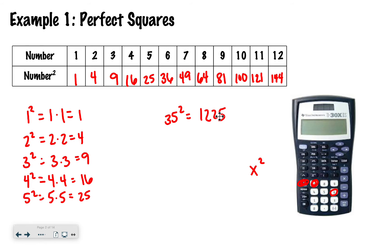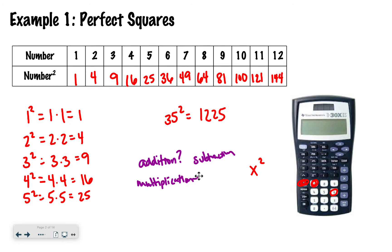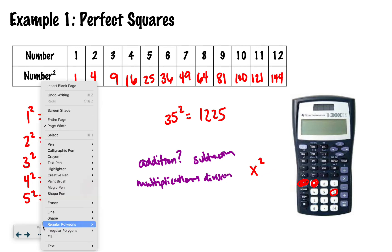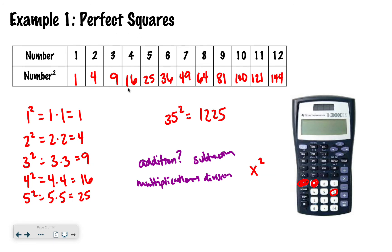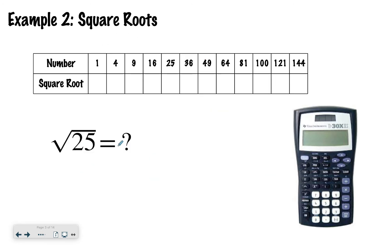Now, before I move to the next slide, I'm going to talk about something that's going to seem a little bit off topic, but I promise it all connects. If I were to ask you what is the opposite of addition, you would say subtraction. And if I ask what's the opposite of multiplication, you would say division. So squares and square roots are opposites of each other.